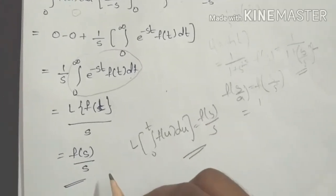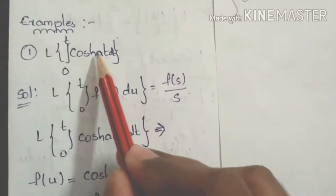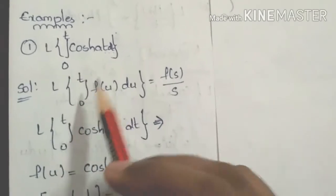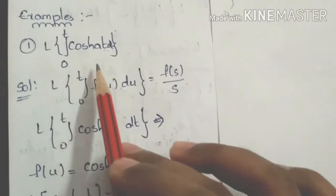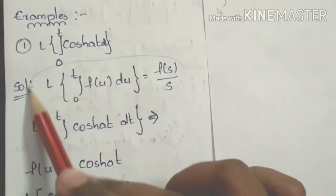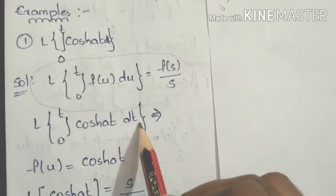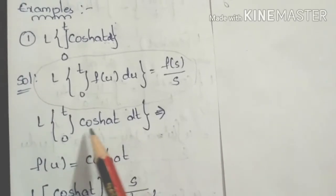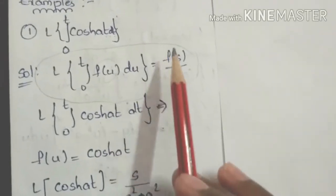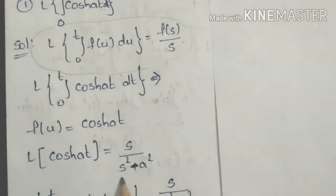Now two problems. First problem: find the Laplace transform of the integral from 0 to t of cosh(at) dt. Since integration is present, we use the formula: Laplace transform of the integral from 0 to t of f(u) du equals F(s)/s. So first we identify f(t) = cosh(at), and find the Laplace transform of cosh(at), which is s/(s² - a²).